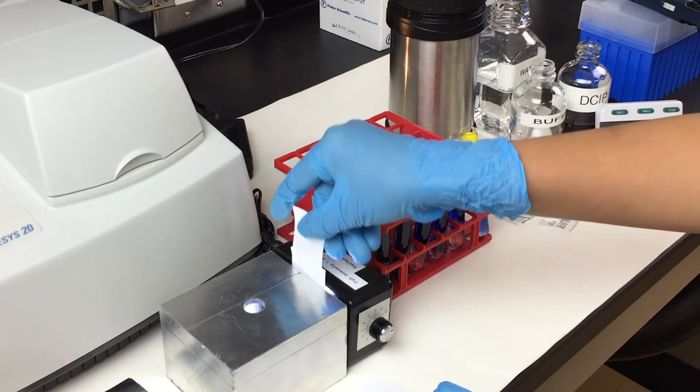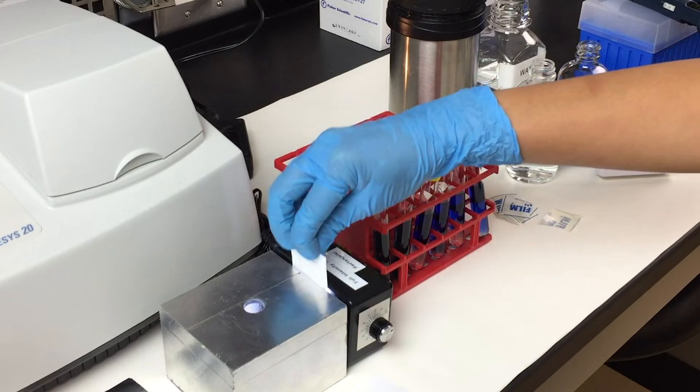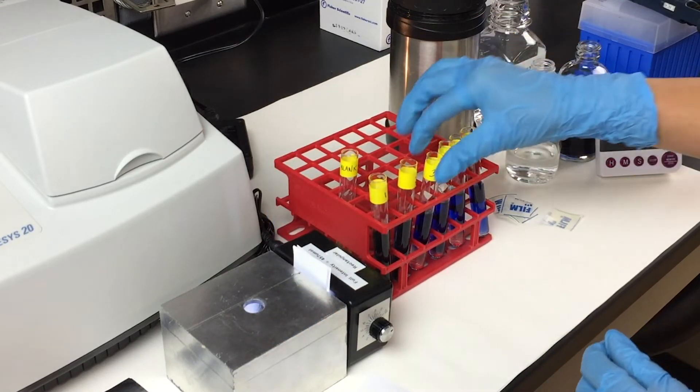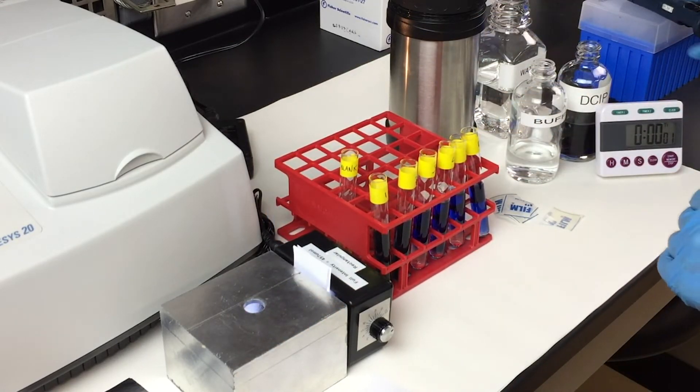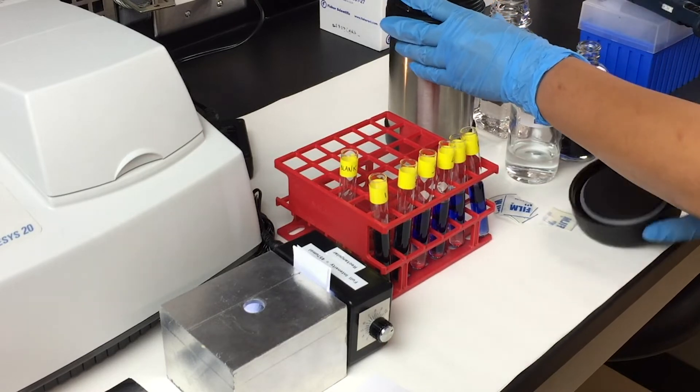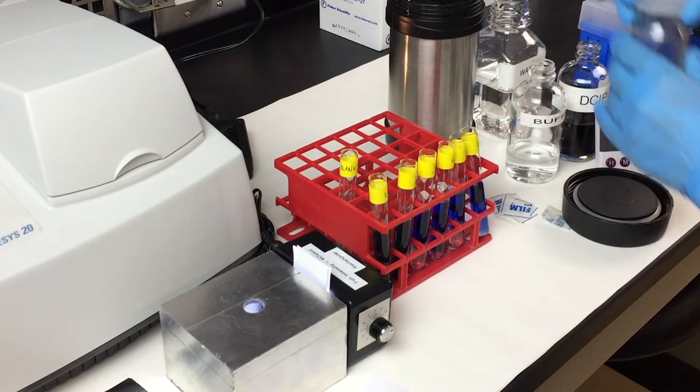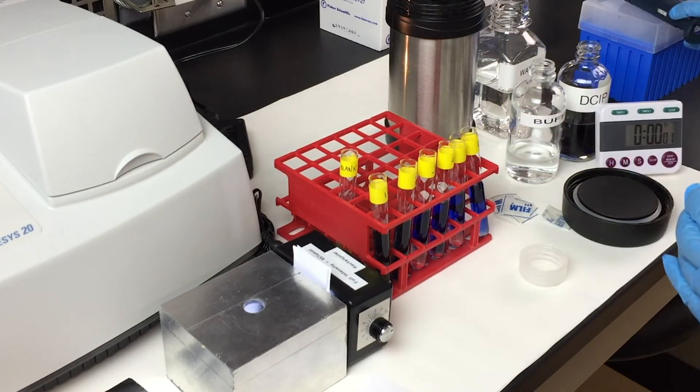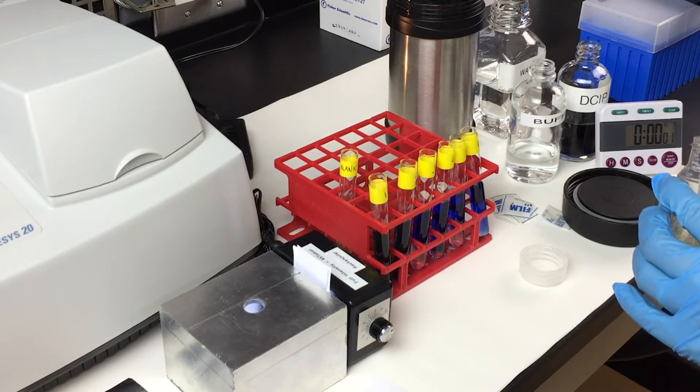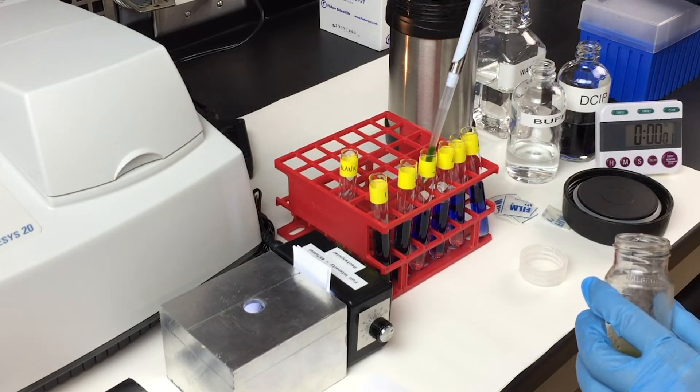For test tube three, it would be three layers of filter paper, and add 0.25 ml of thylakoid solution into test tube three.